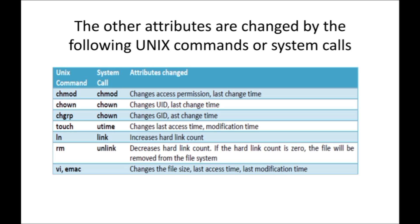The RM command — system call UNLINK — is used to remove or delete a hard link, which decreases the hard link count. If the hard link count reaches zero, the file will be removed from the file system, because at least one path must exist to trace a file. If no path name exists, the file is considered deleted.